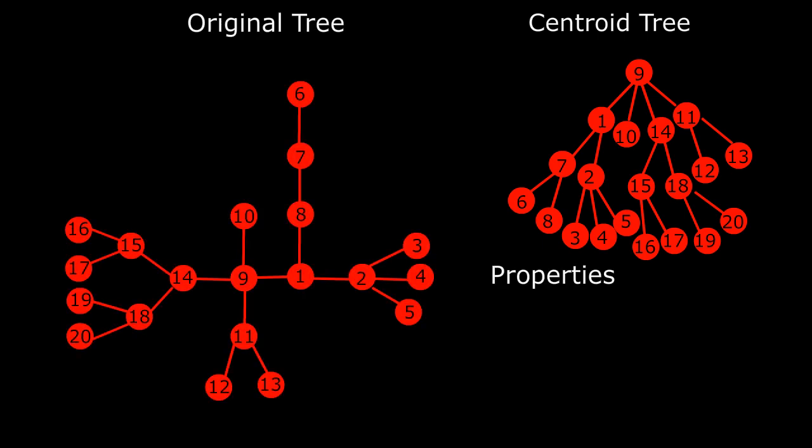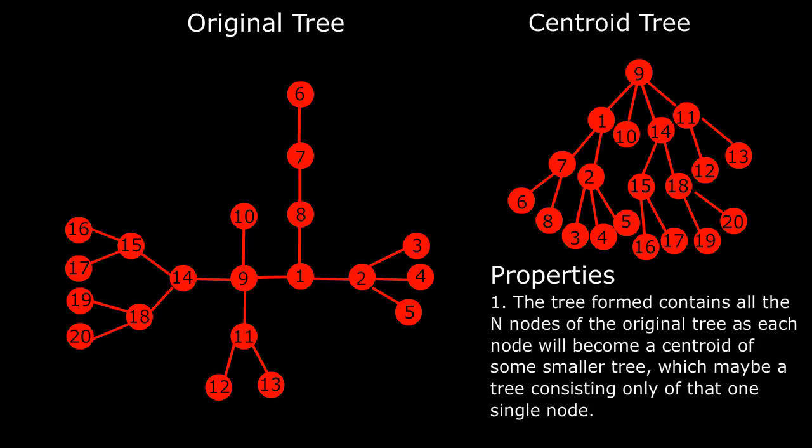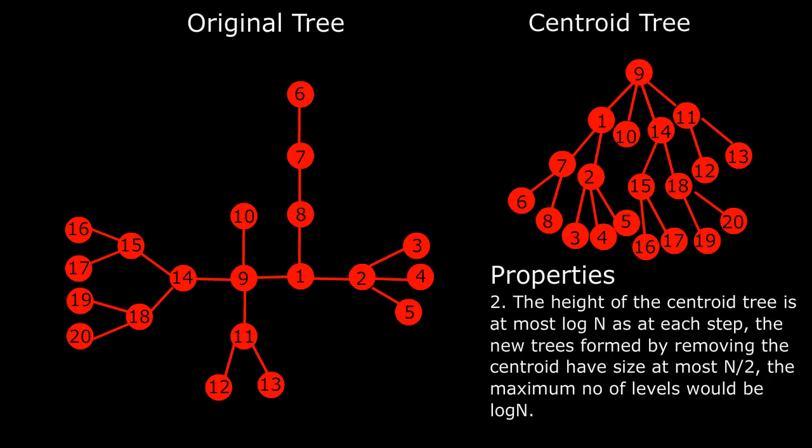Now, let's take a look at some of the properties of the centroid tree we formed. Firstly, the tree contains all the n nodes of the original tree as each node will become the centroid of a smaller tree which may be a tree consisting only of that single node. Secondly, the height of the centroid tree is at most log n as at each step, the new trees formed by removing the centroid have size at most n/2, the maximum number of levels would be log n.